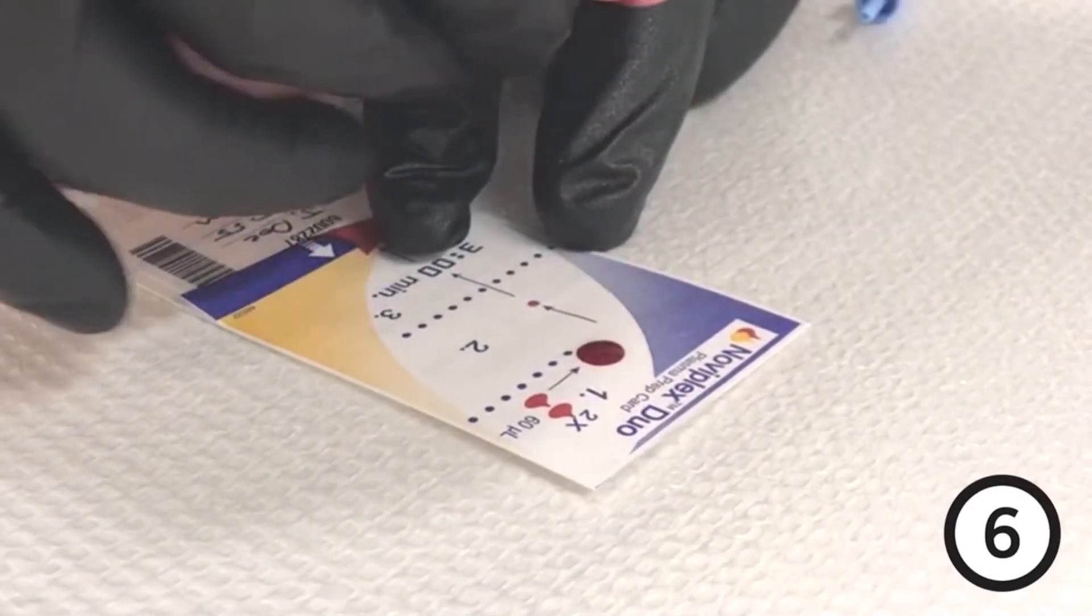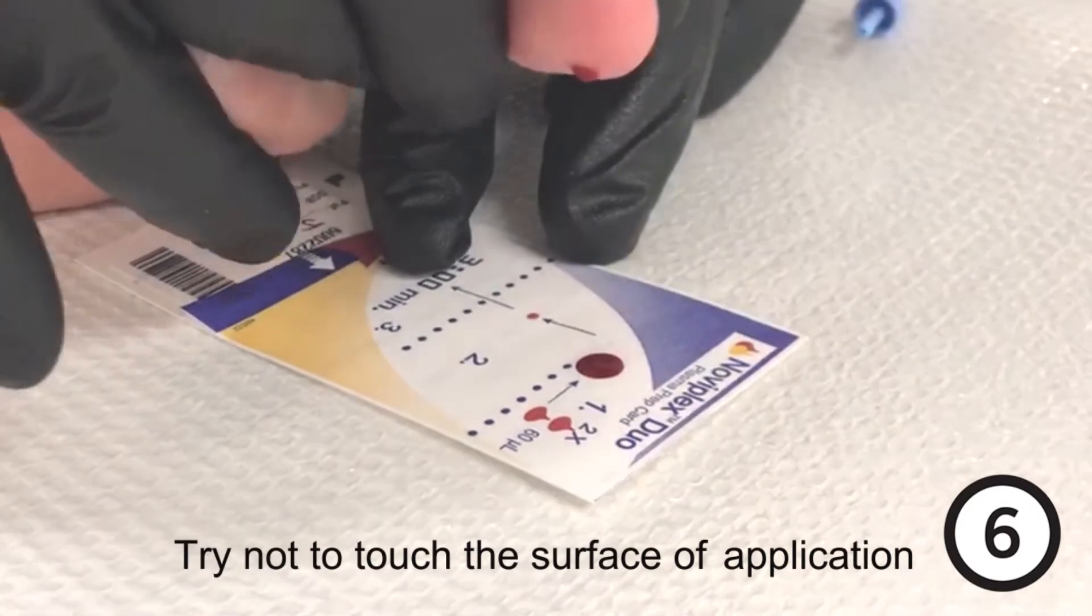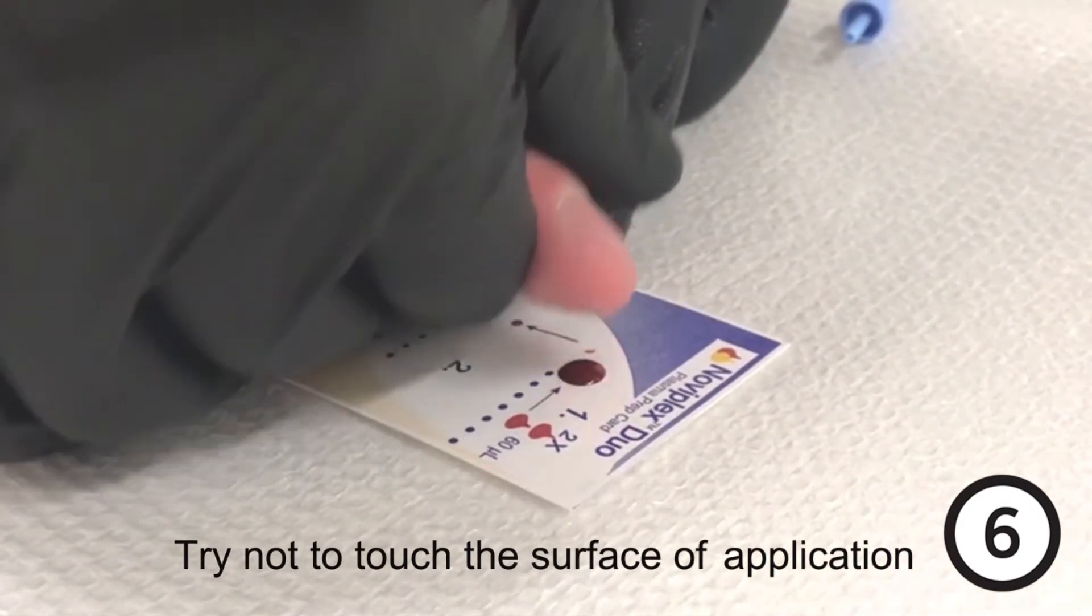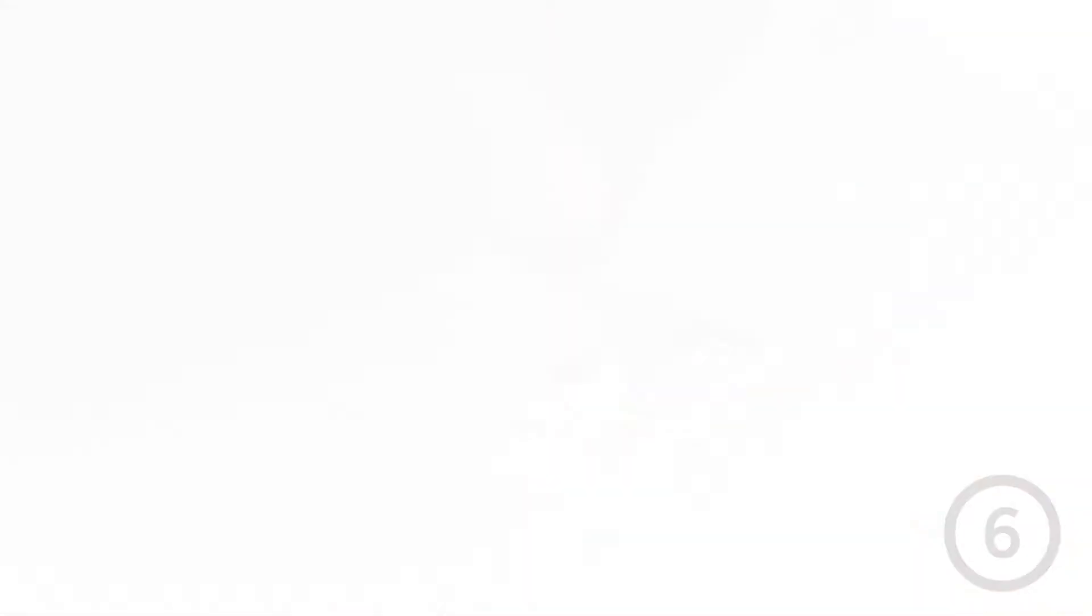Deposit two hanging drops of whole blood onto the surface of the application port as indicated by the blue arrow. Try not to touch the surface of the application port.